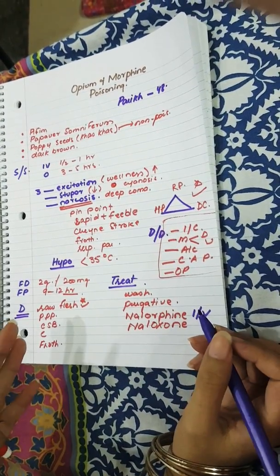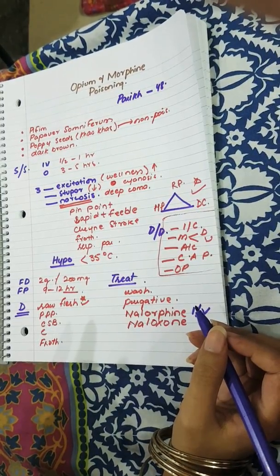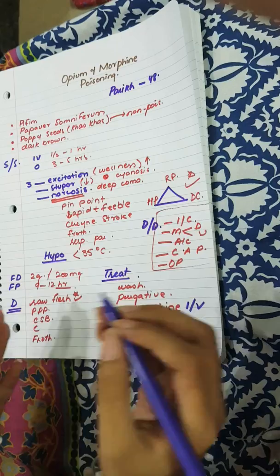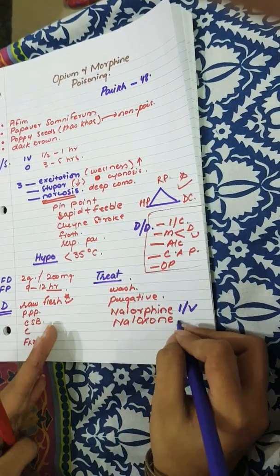And the naloxone is a pure antagonist and is given from 0.4 to 0.8 mg IV or IM every 10 to 15 minutes.